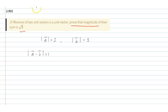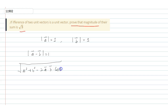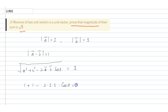The magnitude of A vector minus B vector equals the square root of A squared plus B squared minus 2 times A vector dot B vector times cos theta, and it is equal to 1. So the magnitude of A vector squared gives us: 1 equals 1 plus 1 minus 2 into 1 into 1 into cos theta, and this is equal to 1.